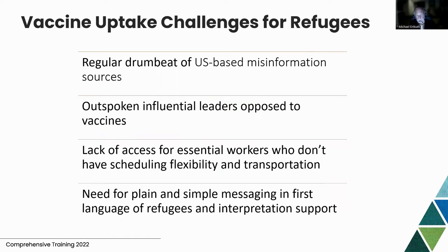The challenges include a lot of misinformation — both domestically and overseas — reaching refugee communities, and influential individuals undermining vaccination efforts. Frontline workers don't have the flexibility or transportation to get to vaccination sites because they're working in chicken plants and other low-pay food processing facilities. We also learned there's a need for plain and simple messaging in the first language of the refugees, along with interpretation services.